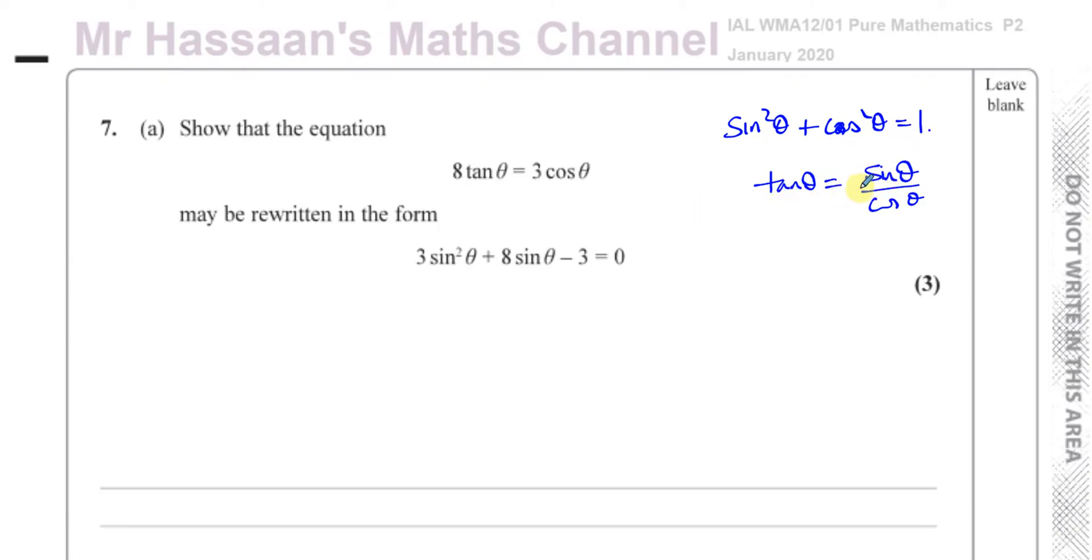Now, in this question, if you look at what we're starting with, the only thing that we can do first really is just change the tan theta into sine theta over cosine theta. So we can say that's 8 times sine theta divided by cosine theta, and that's equal to 3 cosine theta. That's the first step.